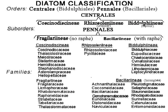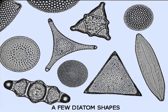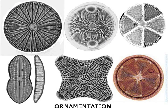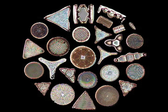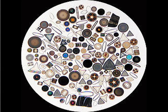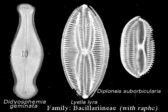Diatoms are classified into orders, families, genera, and species by size, shape, arrangement of pores, cell linking mechanisms, and ornamentation, which include spines, processes, hyaline areas, and in pennate forms, the presence or absence of longitudinal slits called raphe.